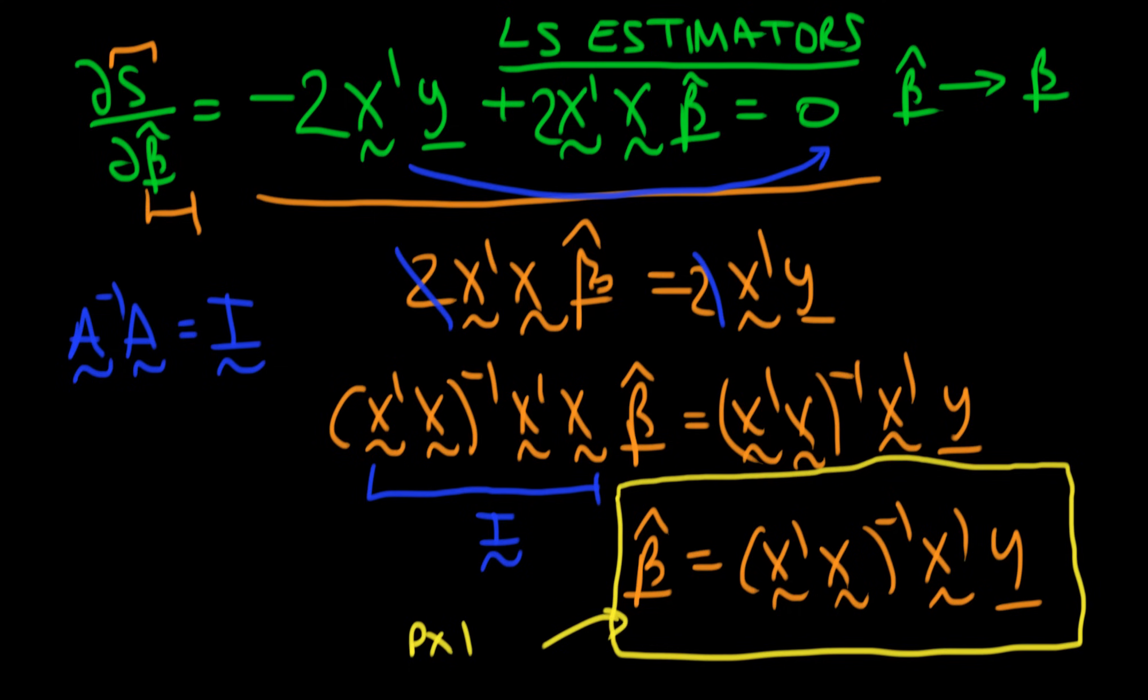Something I should say about this particular expression is because it contains an inverse matrix, this basically assumes that beta hat only exists, or it implies that beta hat only exists if the matrix X'X is non-singular. If X'X is singular, then this tells me that the inverse doesn't exist, so I can't actually derive least squared estimators for the parameters in that case.